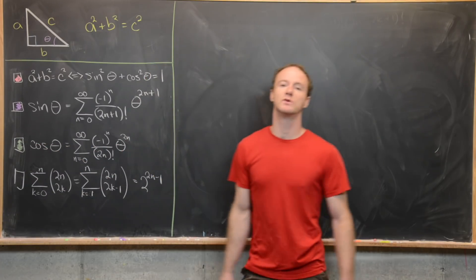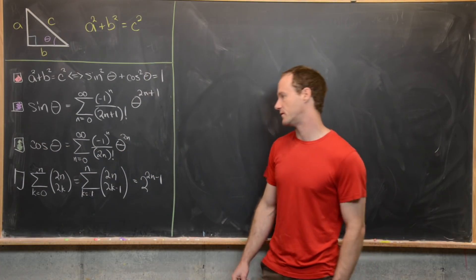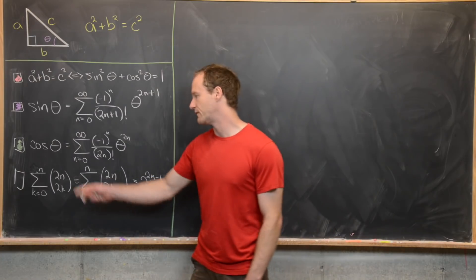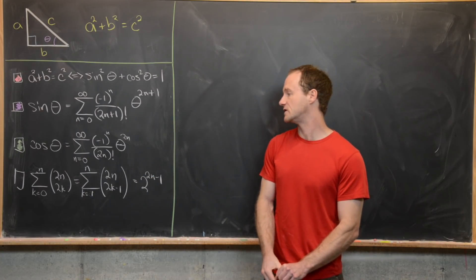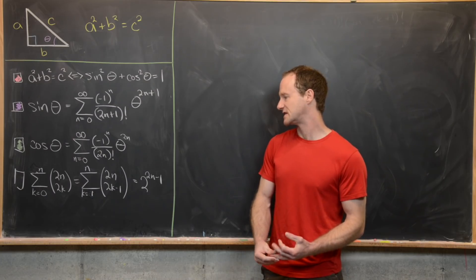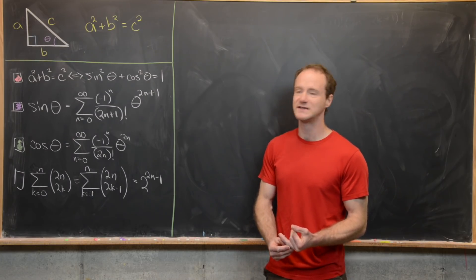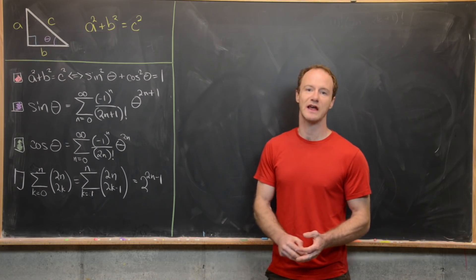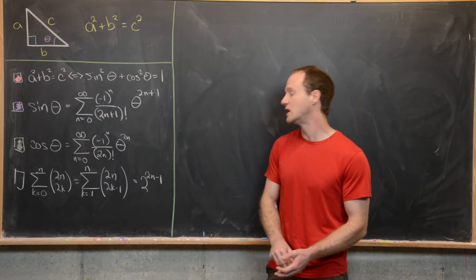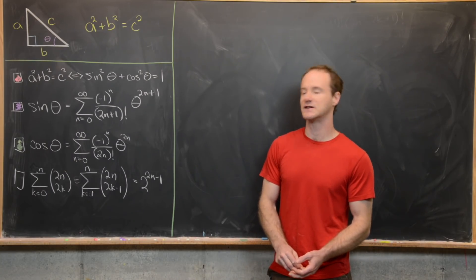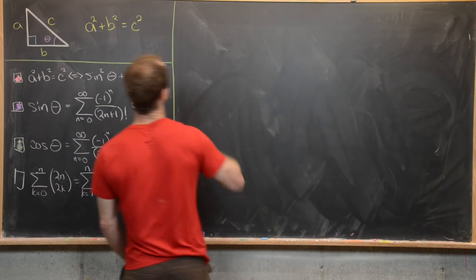The next tool, which we will establish, is about some binomial coefficients. Specifically, the sum as k goes from zero to n of two n choose two k equals the sum as k goes from one to n of two n choose two k minus one, and both equal two to the power of two n minus one.